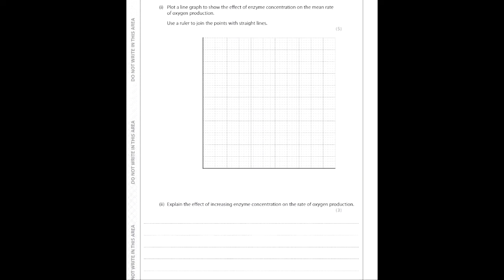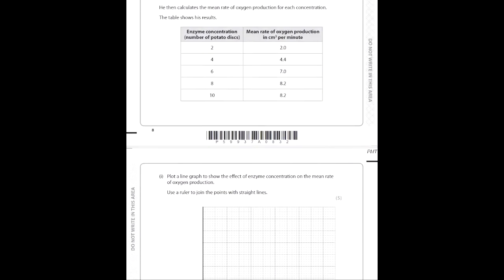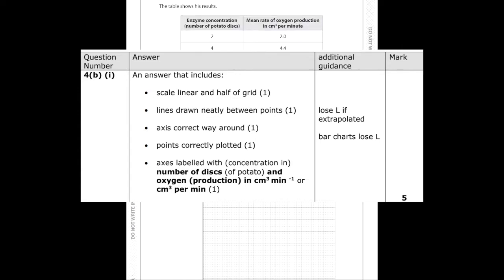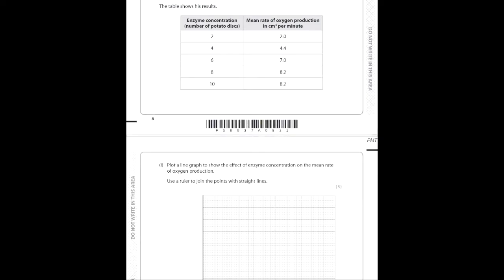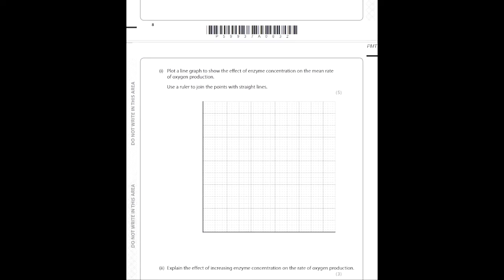Next is a graph question worth five marks. I can't draw the graph well enough on screen to be beneficial to you, so I'm going to put a picture of the mark scheme on screen. For graphs, the mark scheme is usually very concise: linear scale, half of grid, lines neatly drawn between points, axes correct way around, points correctly labeled, and axes numbered with an appropriate scale.